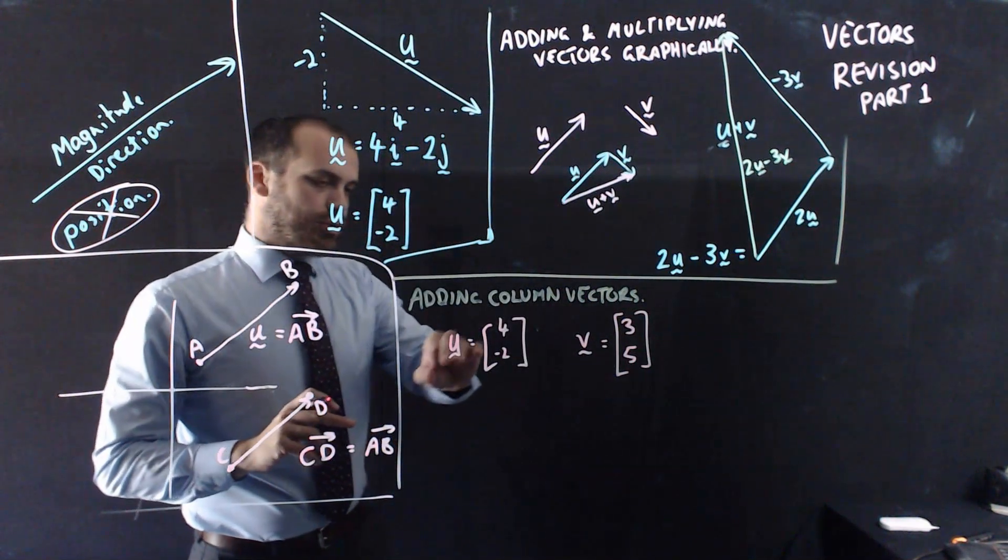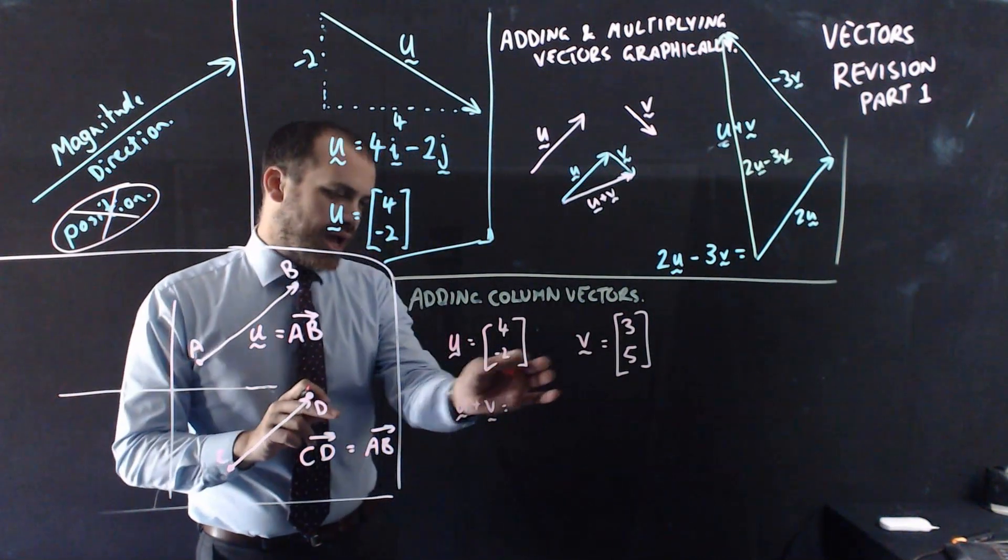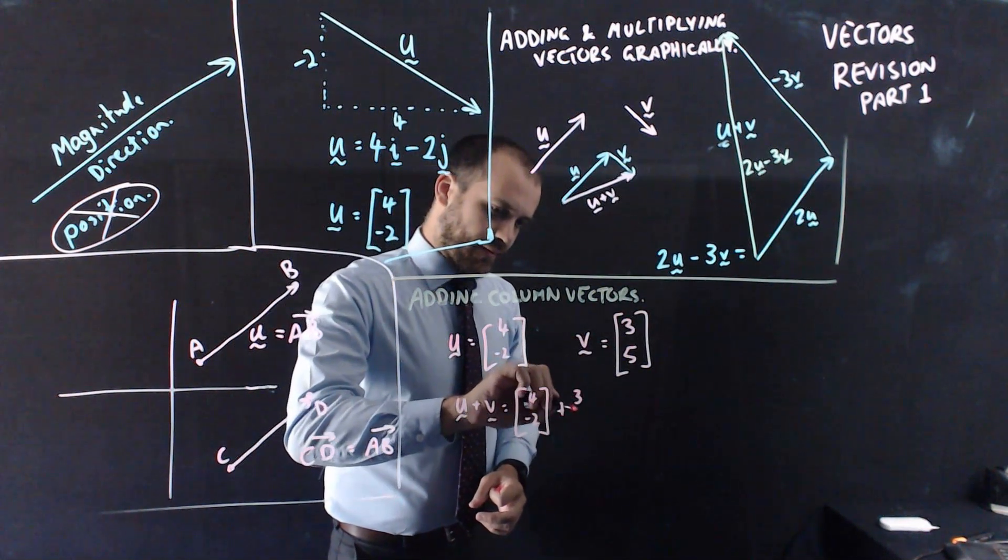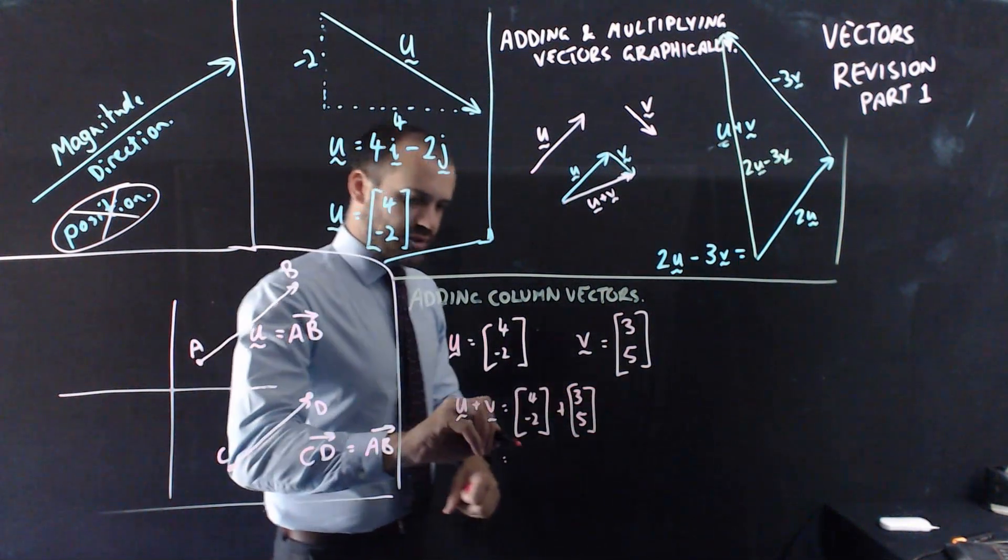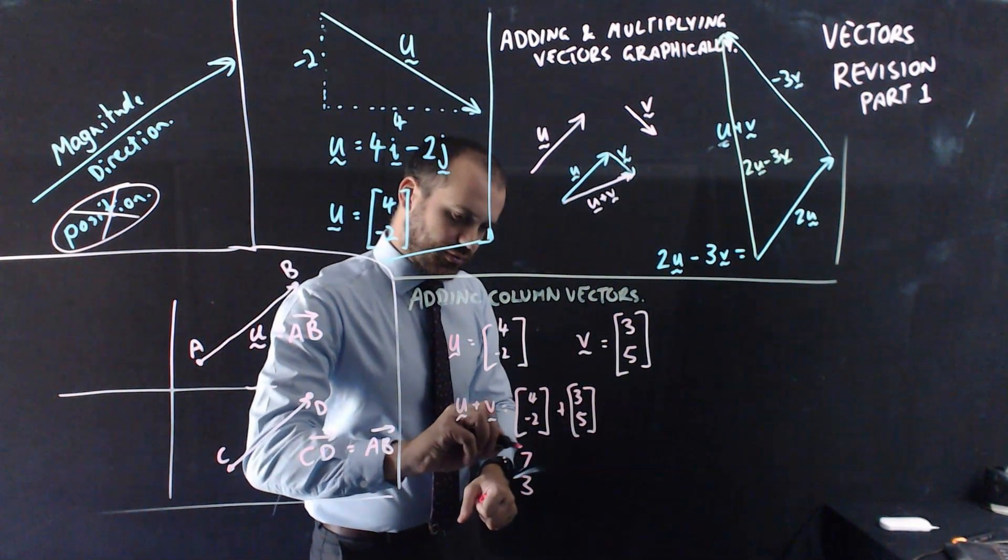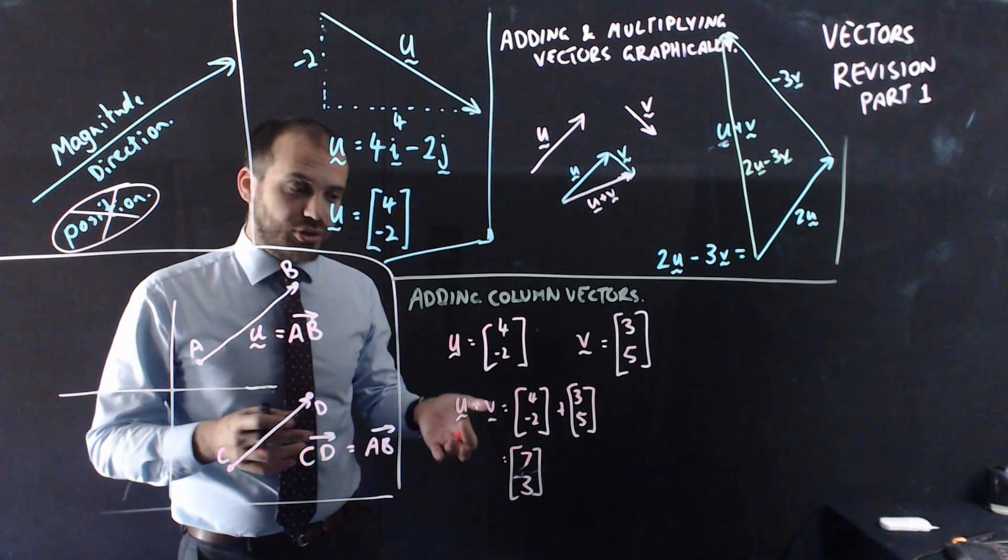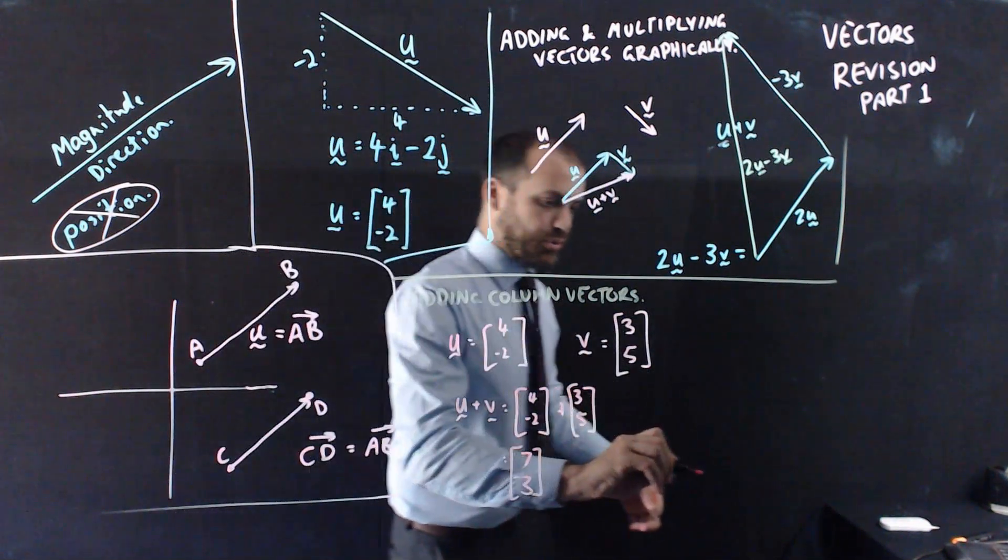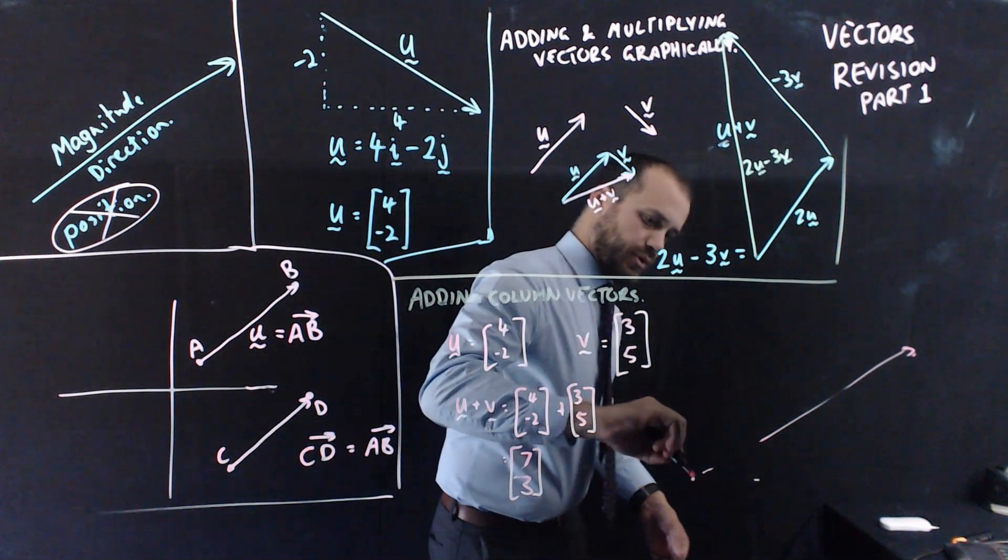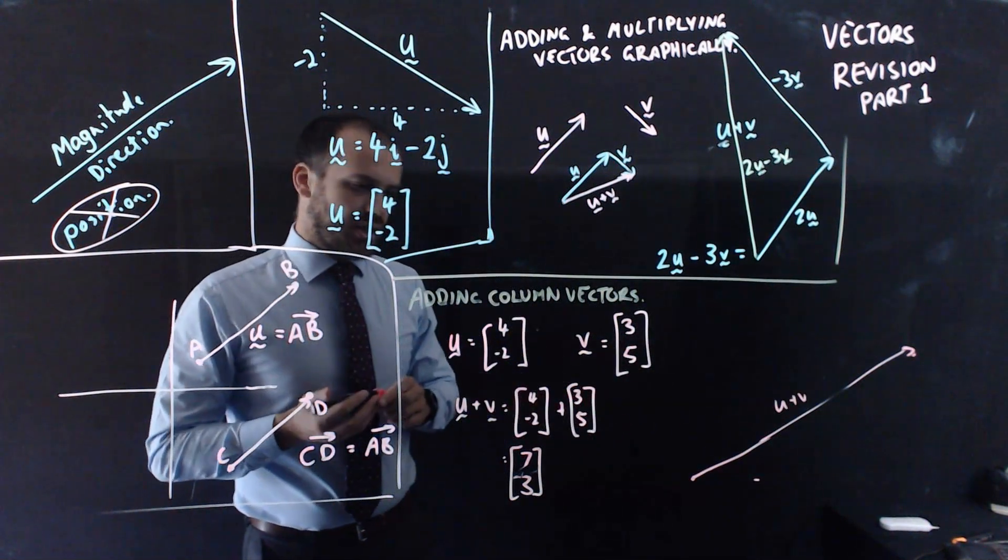Now if I want to do U plus V, well it's really cool because we know all about matrix addition now. We can add these two matrix column matrices together. So that's going to be 4 plus 3 is 7, negative 2 plus 5 is 3. So my new matrix U plus V is [7, 3] as a column matrix, and 7, 3 is 7 across and 3 up. That's what U plus V would look like, 7 across and 3 up. That's adding column vectors.